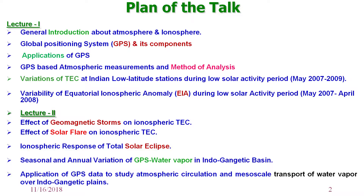In the second lecture, we will discuss applications in space weather studies — the effect of geomagnetic storms on the ionosphere, the effect of solar flares on the ionosphere and total electron content, the response of the ionosphere during a total solar eclipse, the seasonal and annual variation of GPS water vapor, and GPS applications in crustal motion and atmospheric circulation.